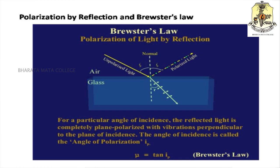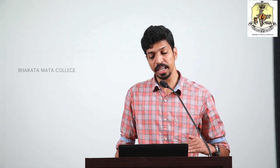Sir David Brewster developed a law based on this. According to Brewster's law, the tangent of the angle of polarization is equal to the refractive index of the medium. So if we know the refractive index, we can determine the angle of polarization. For example, for glass the refractive index is about 1.5, so the angle of polarization is about 57.5 degrees. This means that by allowing unpolarized light to fall at about 57.5 degrees, the reflected light is completely plane polarized.